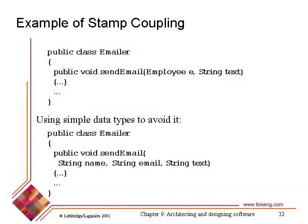The better approach is shown at the bottom of slide 32, where we instead use strings as the arguments to the sendEmail method. If we do that, then all we're doing is taking advantage of data types that are used in every single Java system. We don't have to worry about coupling to the string class because it's always available. This makes the emailer class a lot more flexible — it can be used without having to have employees along with it.